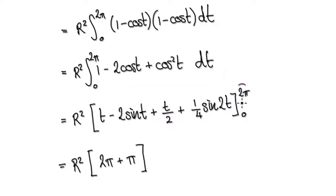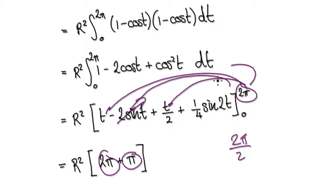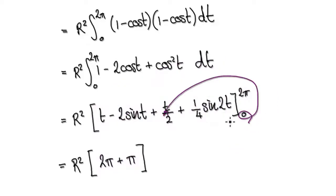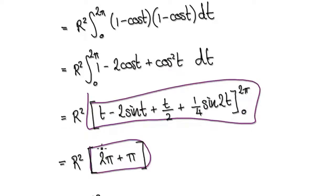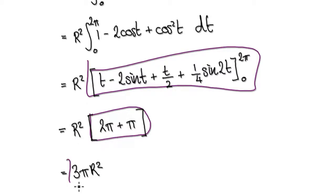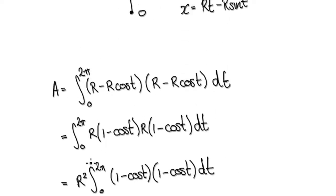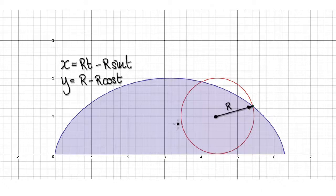Evaluating at the bounds: putting in 2π gives 2π; sine of 2π is 0 so that term disappears; 2π/2 gives π; and the sine terms all vanish. Putting in 0, everything disappears. So the whole expression becomes 3π, giving 3π times R squared — which equals 3 times πR². Therefore, the area underneath the cycloid is exactly 3 times the area of the circle.